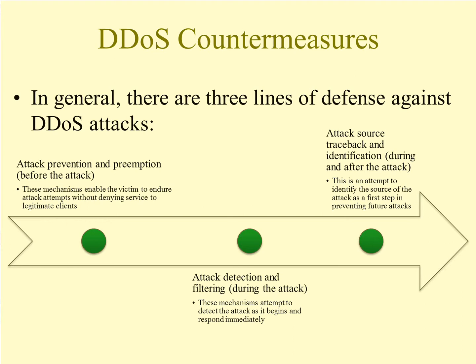The second approach is attack detection and filtering, which happens during the attack. Intrusion detection systems fit into this category. It tries to detect the attack as it begins and respond immediately, minimizing the impact on the target. We can look for suspicious patterns of behavior — for example, knowing what typical data usage looks like on the network and watching for anomalies where traffic spikes, then deciding after a few seconds to a couple of minutes that a DDoS is occurring.